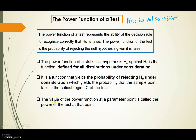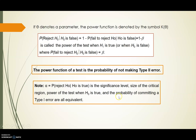The power function — the value of the power function at a parameter point — is called the power of the test at that point. For example, if we use theta equals 70, the power of the test is the value at theta equals 70. If theta denotes a parameter, the power function is denoted by the symbol K(theta).